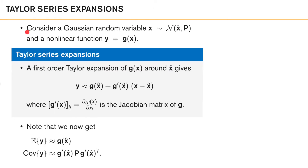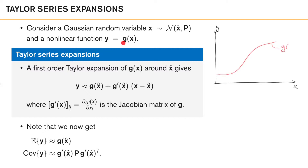Let's look at what we mean by linearization in a filtering context by considering a Gaussian random variable x with mean x̂ and covariance P, and an additional random variable y which is dependent on x through a nonlinear function g. We want to first linearize our nonlinear model. In the scalar case, we have two random variables x and y, mapped by this nonlinear function g.